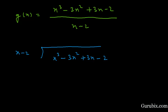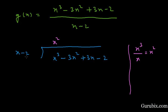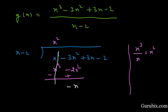To find the first term of the quotient, we divide x cubed — the first term of the dividend — by x, the first term of the divisor. This gives x squared. So the first term of the quotient is x squared. We multiply all terms of the divisor by x squared to get x cubed minus 2x squared, then change the sign. The x cubed terms cancel, leaving minus x squared.